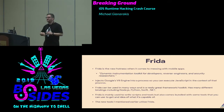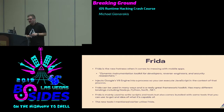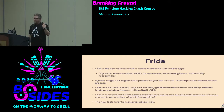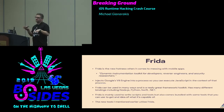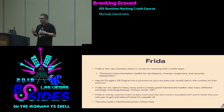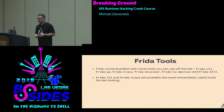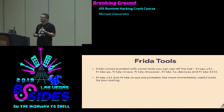So let's move on to Frida. Frida is kind of the new hotness when it comes to messing with mobile apps. From their website: 'a dynamic instrumentation toolkit for developers, reverse engineers and security researchers.' It essentially just injects Google's V8 engine into a process so you can execute JavaScript in the context of that process and access memory. It has many different bindings to all different kinds of languages — Python and whatever if you don't like JavaScript. It's mainly used to write scripts and tools but also comes bundled with tools including Frida CLI, Frida PS, and Frida Trace. Frida CLI and Frida Trace are probably the most immediately useful for pen testing. Those new tools I mentioned earlier — like Objection and Needle — utilize Frida quite heavily, so it's good to understand how Frida works.